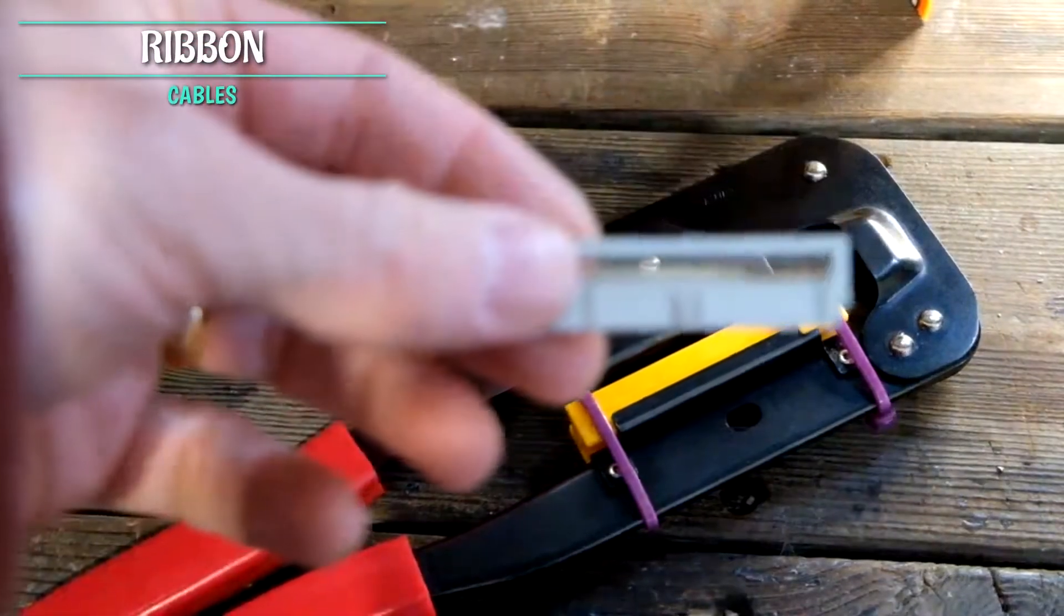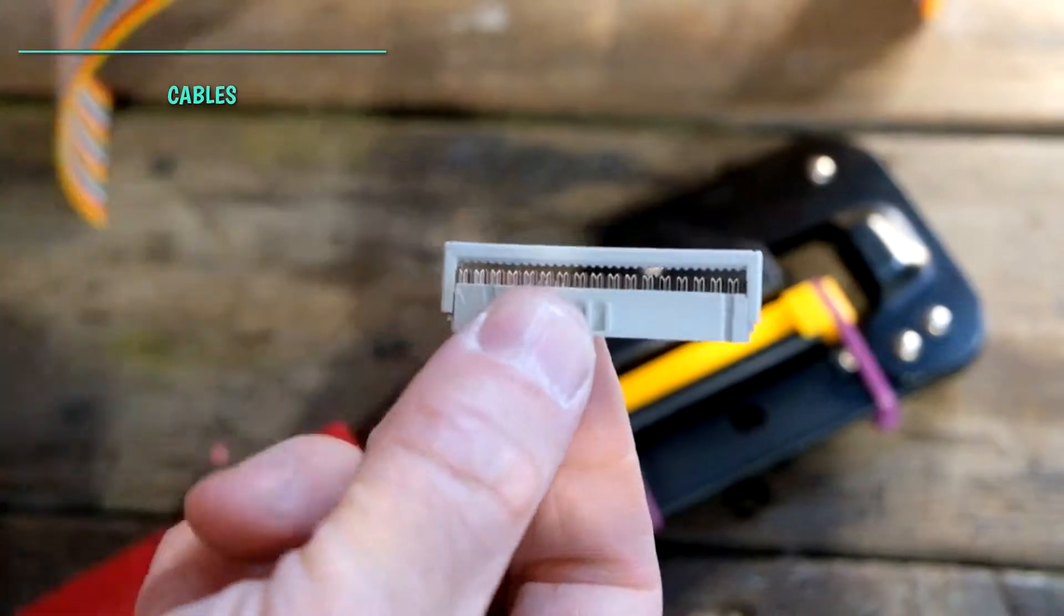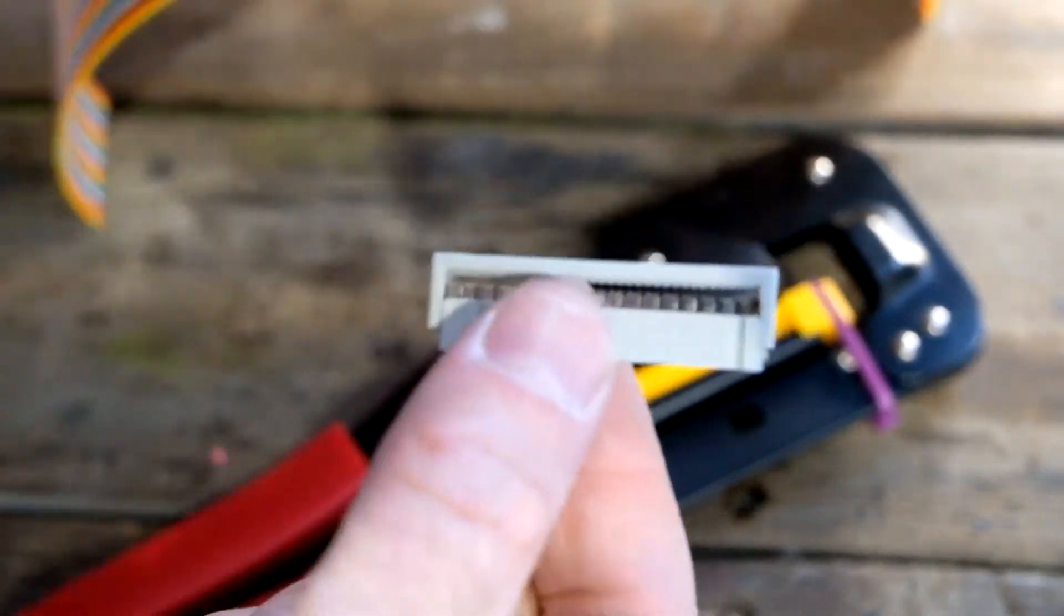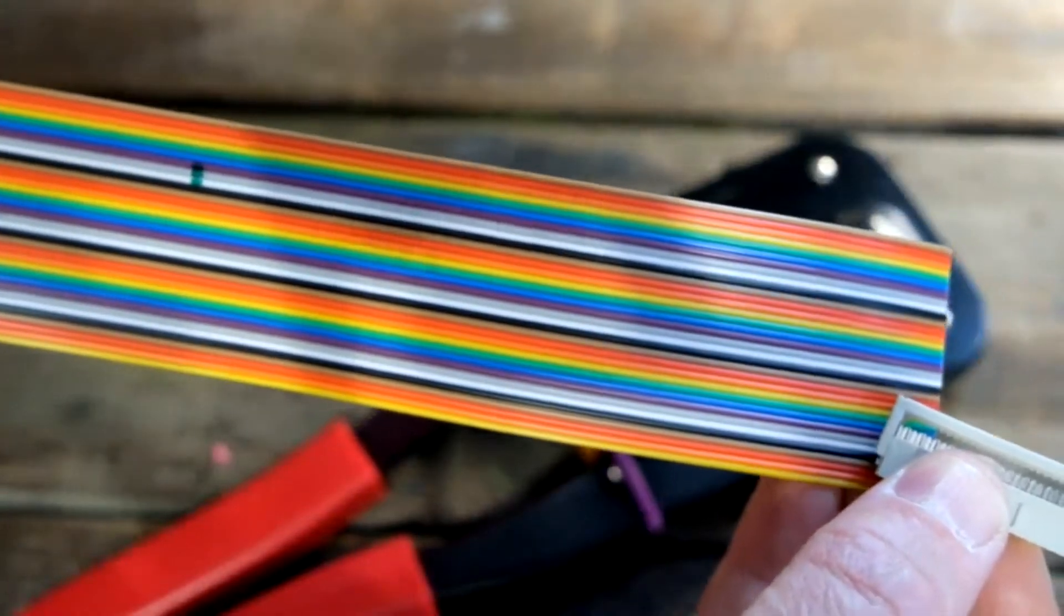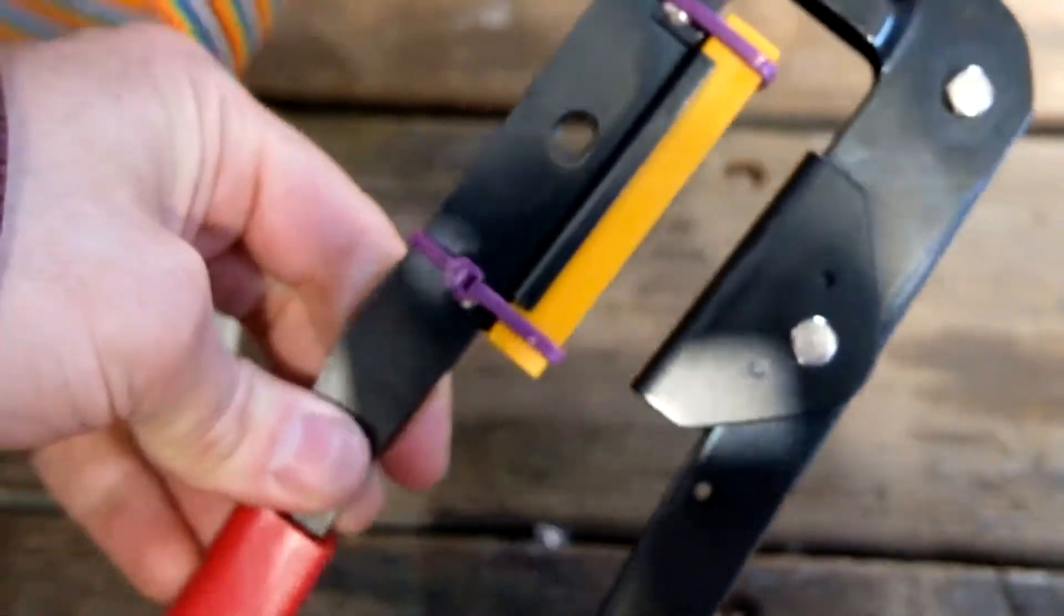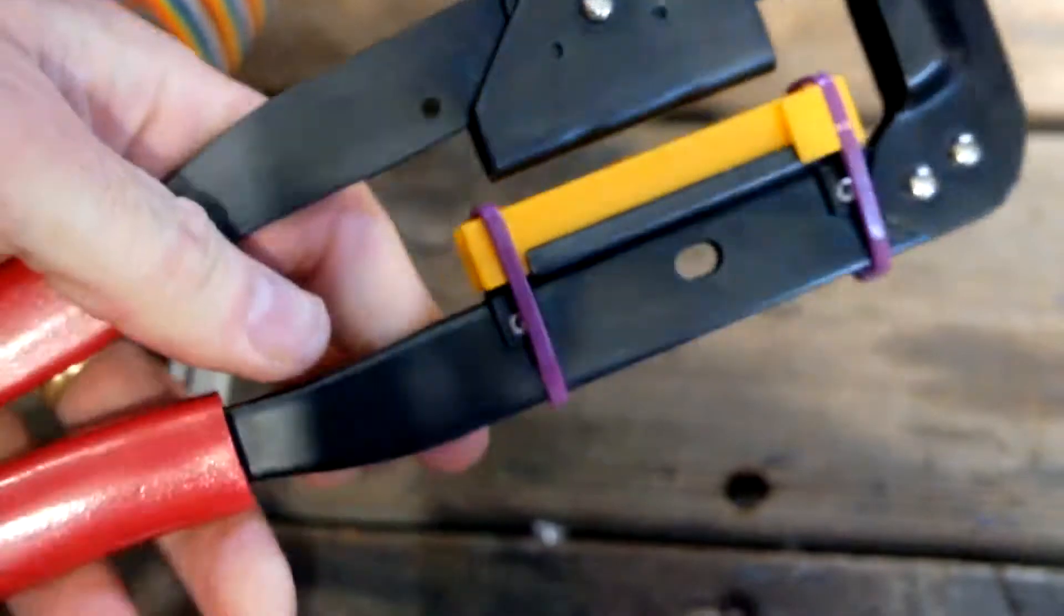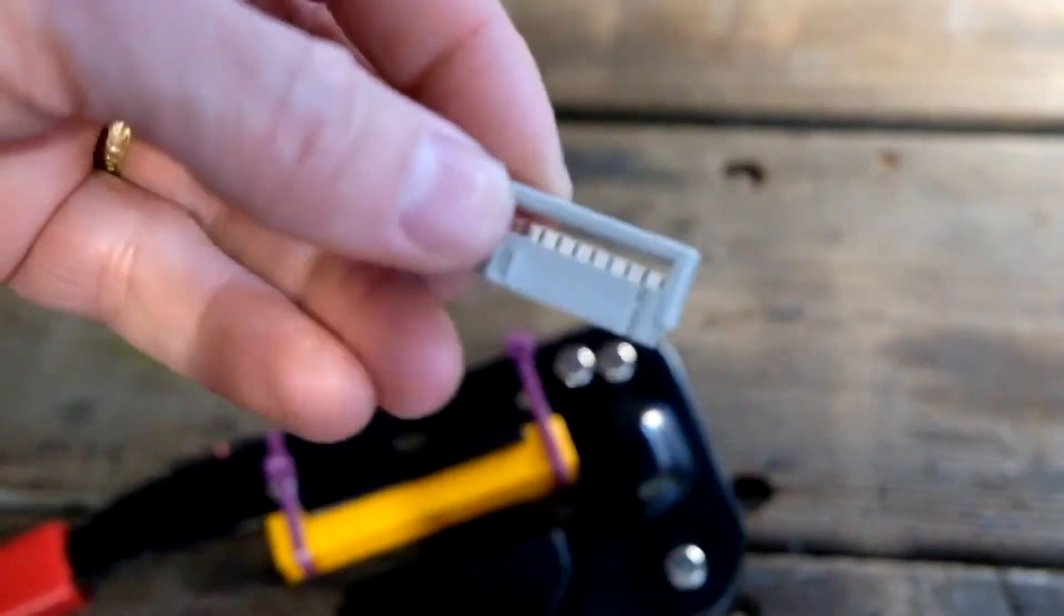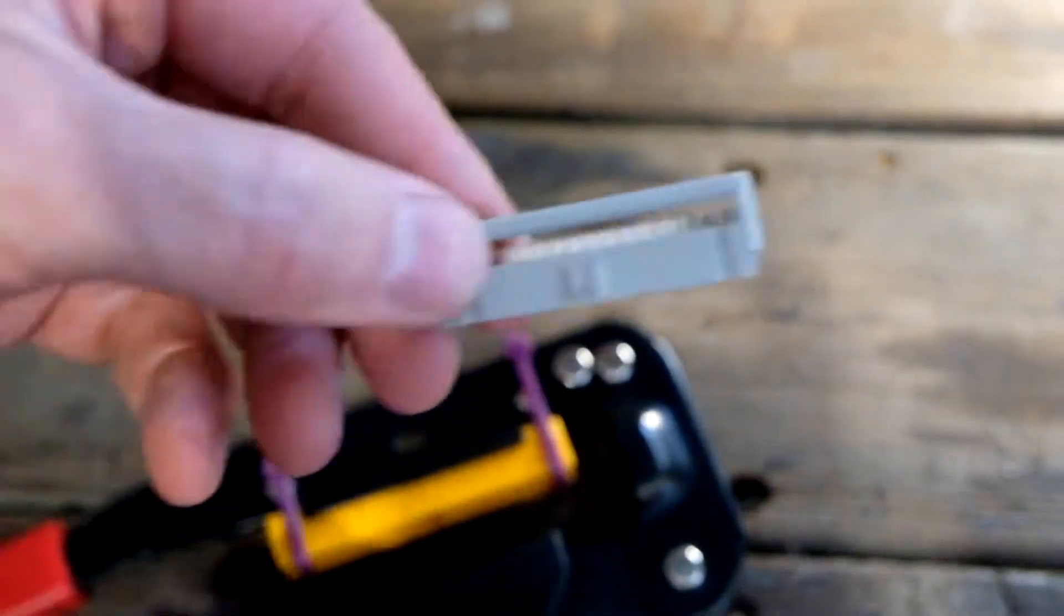Okay, so these here are 34 pin ribbon connectors, and we're going to attach them to this ribbon cable here, which is also 34 pin. This is a ribbon cable crimper. They're easily purchased on eBay if you want one. I'm going to make up all your ribbon cables for all the pinball guys who are the recipients of the cables at the moment, but I'm just going to demonstrate how you would use these in the future if you wanted to. It's super simple, super satisfying. I highly recommend that you do it.